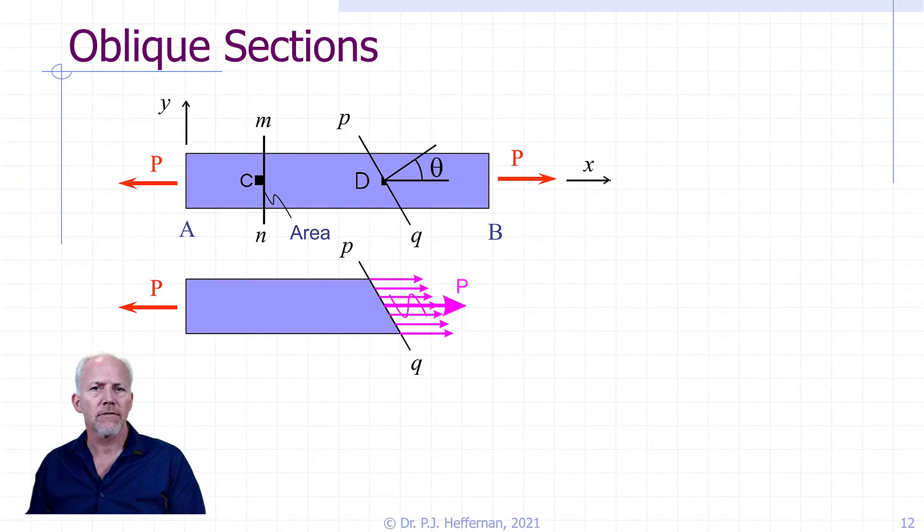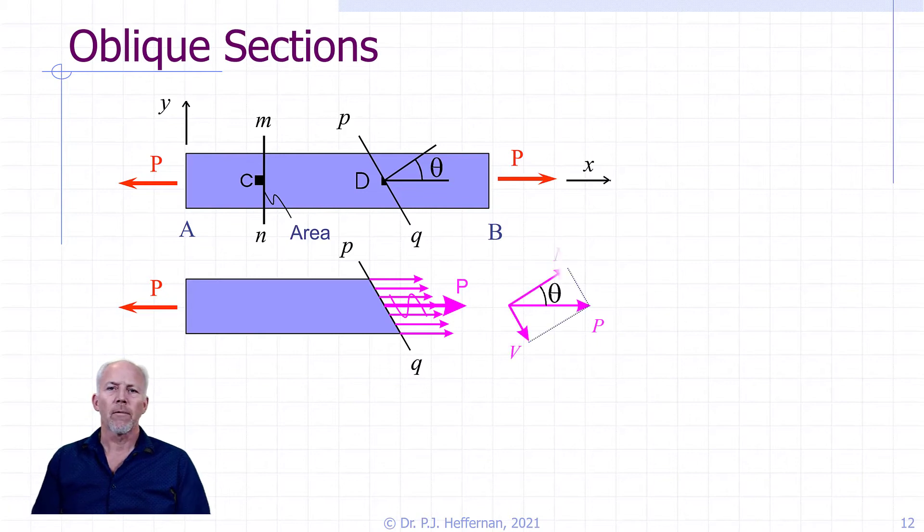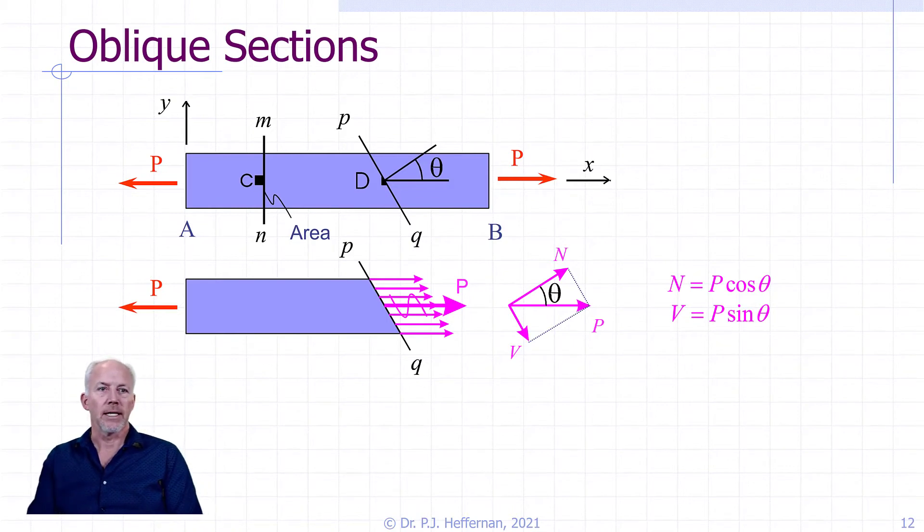And so let's focus on that p. So we have our normal force p, but what we want to do is break it into its components that are now normal to the new cross-section and parallel to that new cross-section. And so we have to rotate it through theta, and we get a normal force N equal to p cos theta, and our shear force to this new plane or new orientation is equal to p sin theta.